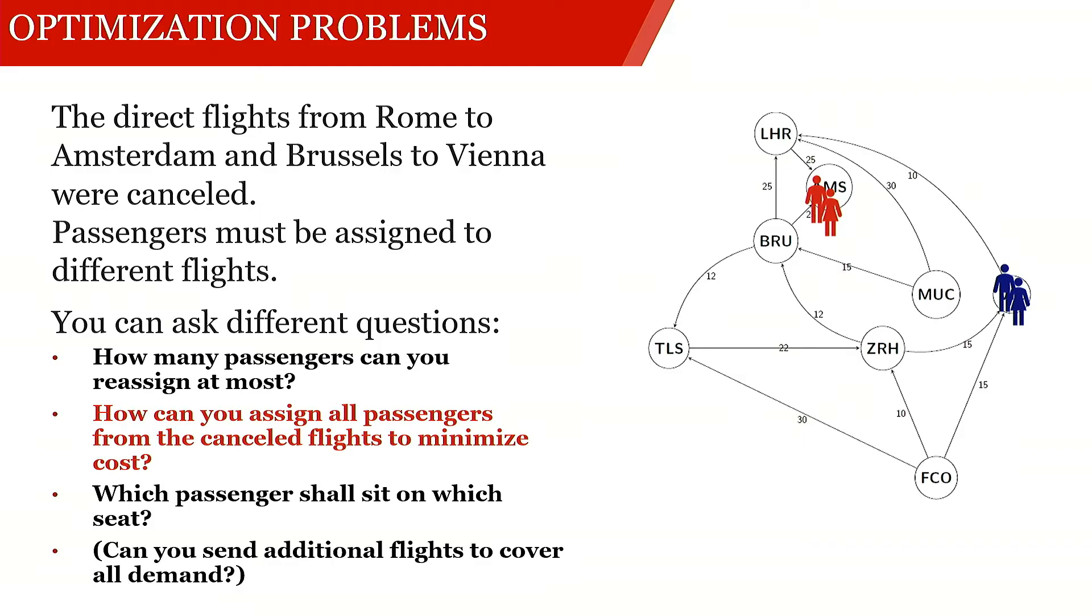The problem if we just use the network flow problem as is, is that the people from Brussels will go to Amsterdam while the people from Rome will go to Vienna, which is not going to make any one of them happy. So what do we do instead?